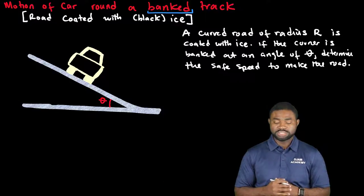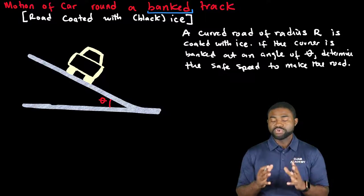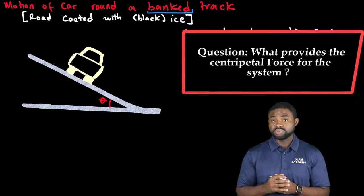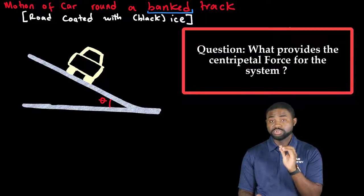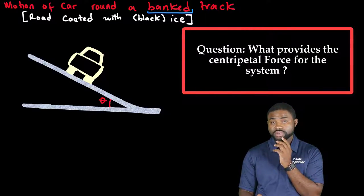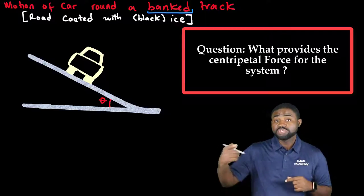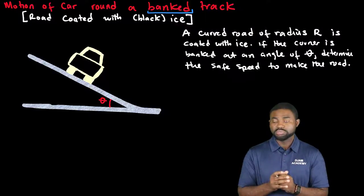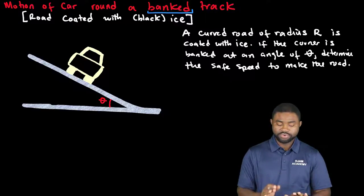So the question I want to ask is, when the road is tilted at a certain angle and coated with ice, what then provides the centripetal force required for the car to move around the circular track? In order to answer this question, first, you need to draw a free body diagram.